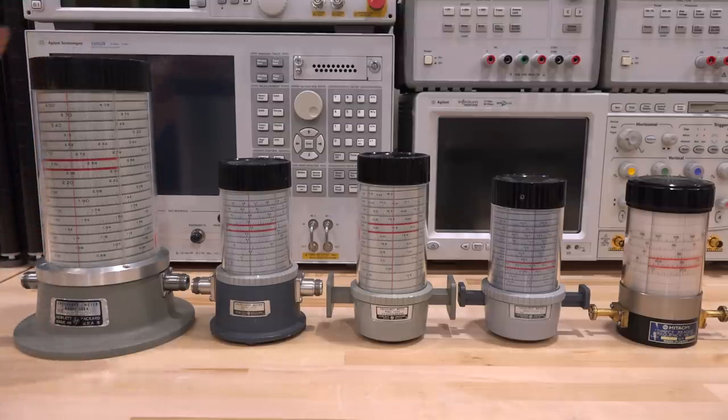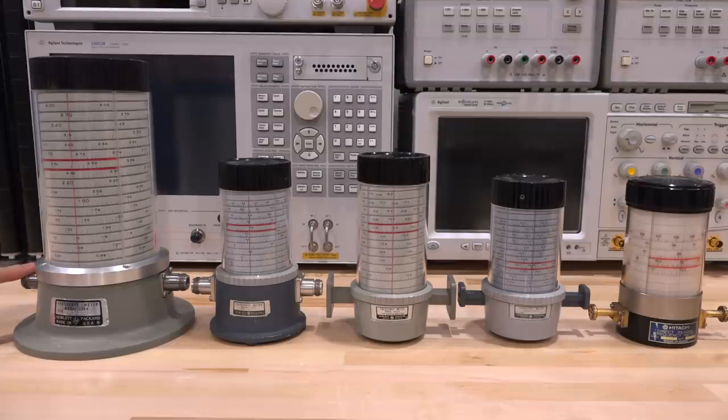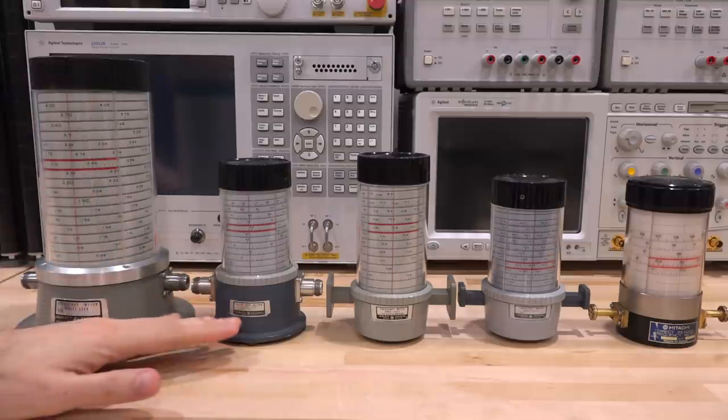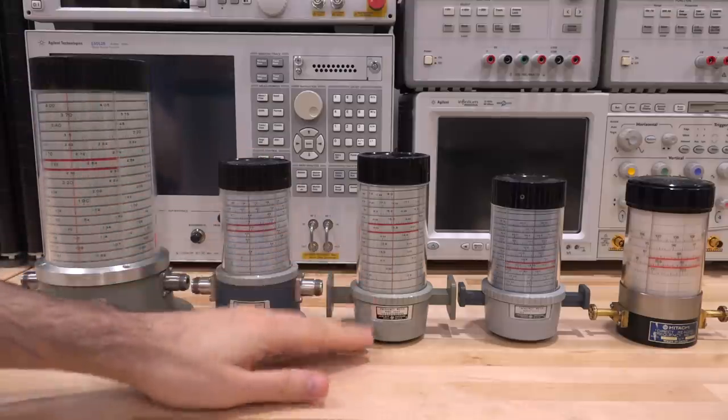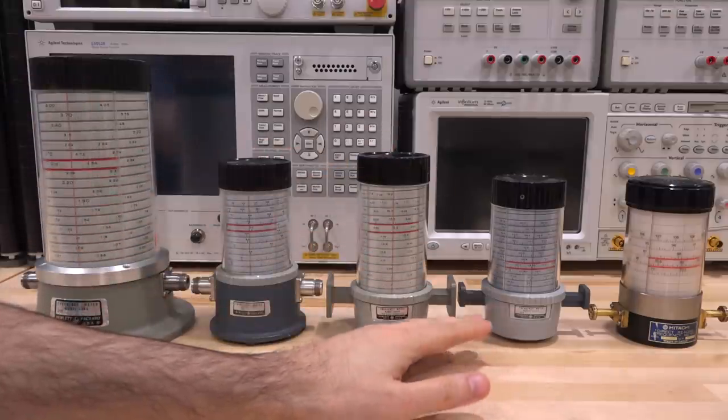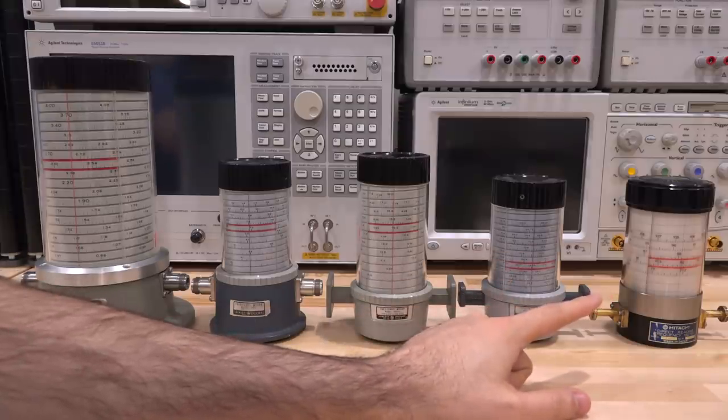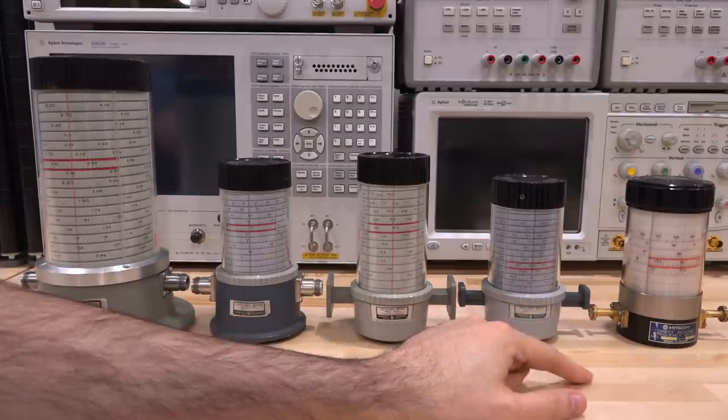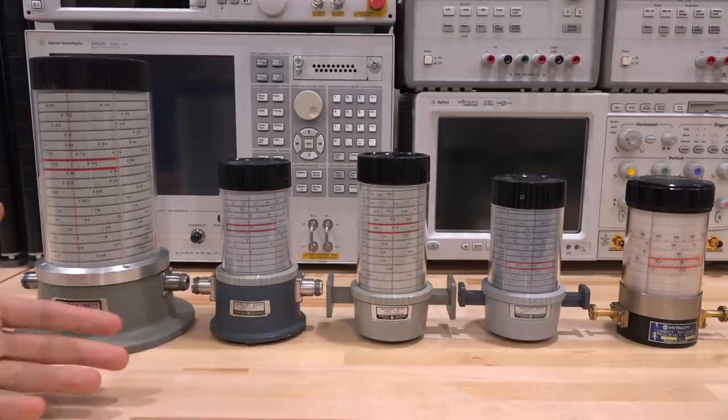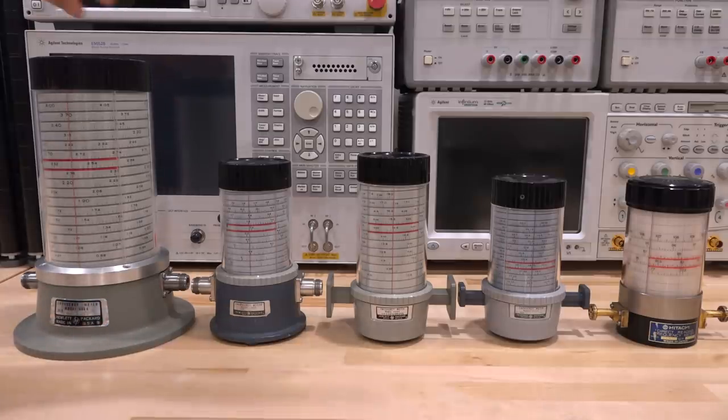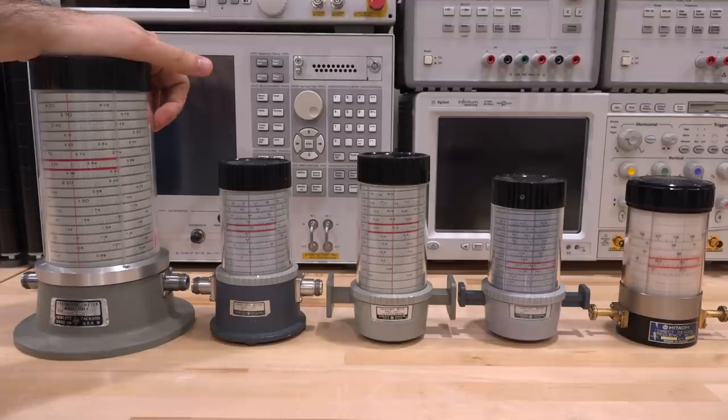So these ones are actually coaxial so they have type N connectors on each end and they start around just under 1 gigahertz to 4 gigahertz and this goes from 4 to 12 then 12 to 18 and the one I'm missing is 18 to 26. This is 26 to 40 and the last one is actually W band which is 75 to 110 gigahertz.